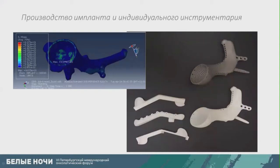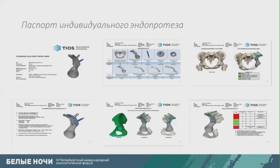3D printing is used to print an implant and a set of templates for resection and implant installation. Implant production depends on the type of resection and fixation method. We can additionally test the strength of the implant, which finally produces procedures of optimal design.